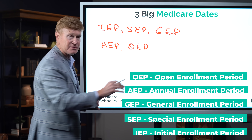The third big date is September 1st through October 1st. During this one-month period, insurance companies are preparing and sending you a letter called the Annual Notice of Change. In this letter, the company that has you covered — either by an Advantage Plan or a Prescription Drug Plan — discloses exactly what they're going to be changing for the coming year.